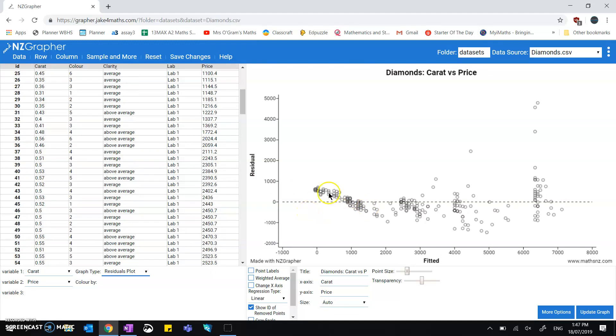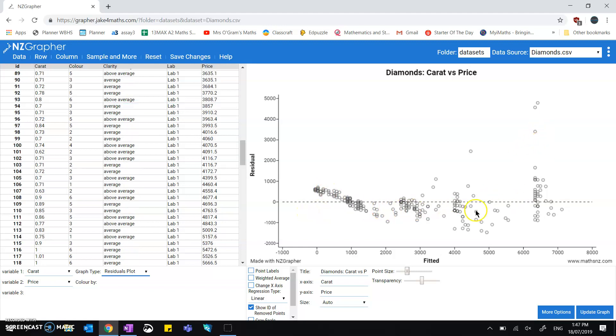This graph is showing us where the data points end up on the graph, where the response variable is put along the bottom, and then how much it differs from the line of best fit. That regression line is the zero line.